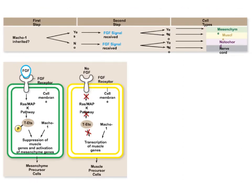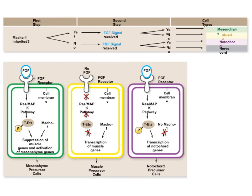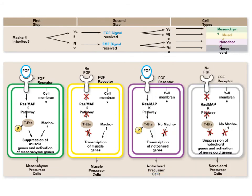We have four possible combinations. The next combination is: there is no cytoplasmic determinant, but they do get a signal from the neighboring cell — under this scenario, cells become notochord cells. And finally, if they get neither the cytoplasmic determinant nor the cell signal from the neighboring cells, then they will become nerve cells. So these are the four combinations resulting in four possible types of cells.